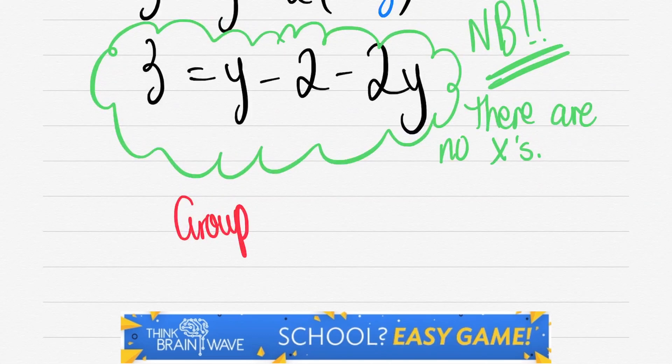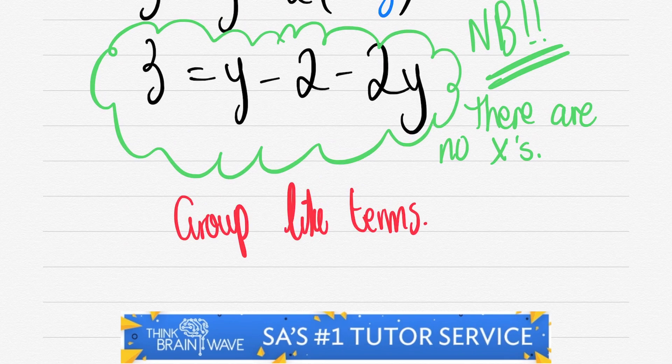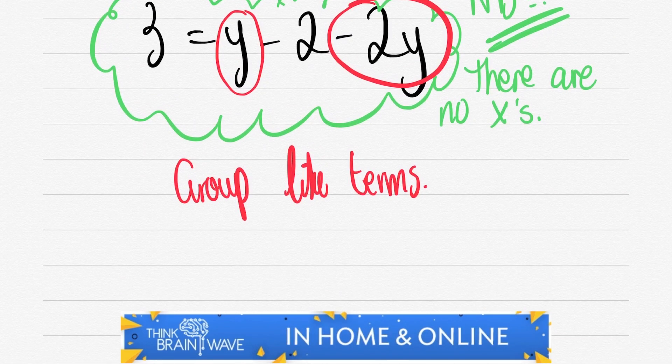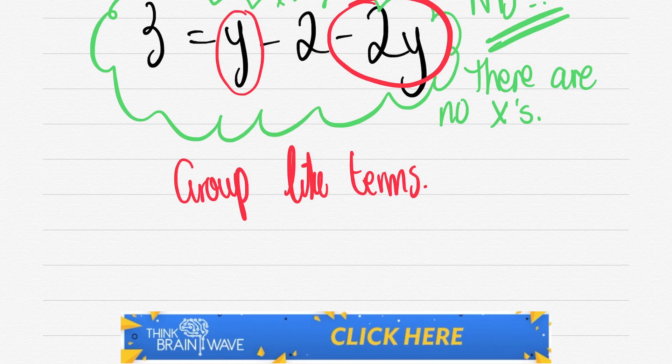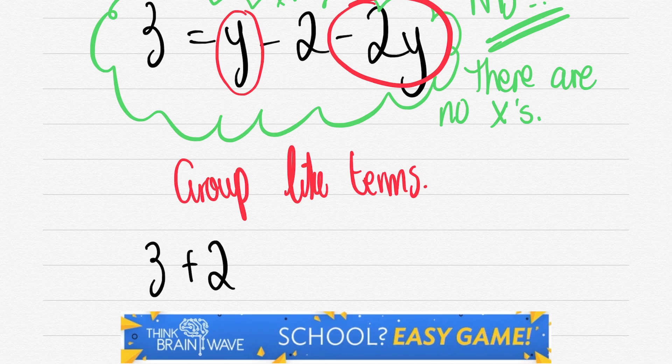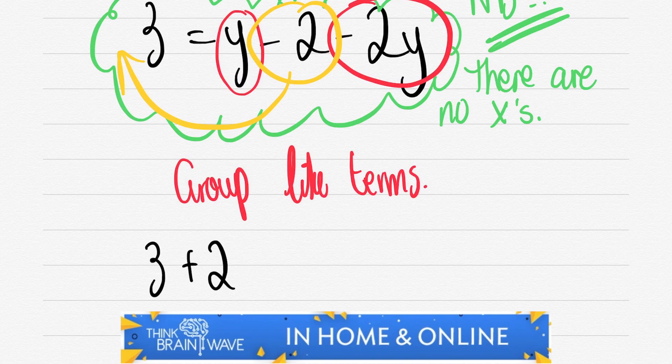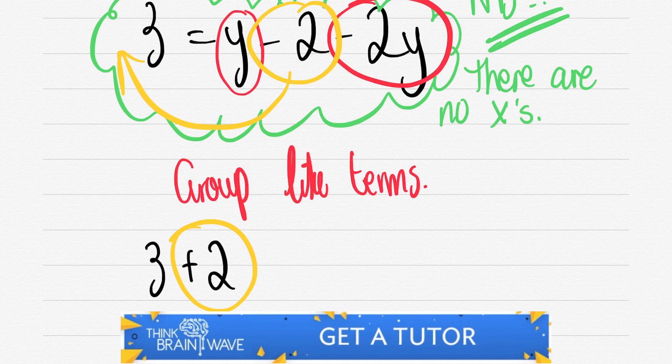Okay, let's group our like terms. We have y and -2y. So we'll take our minus two across to the left hand side. When it goes across we change from a negative to a positive, hence the positive two that I've written down.